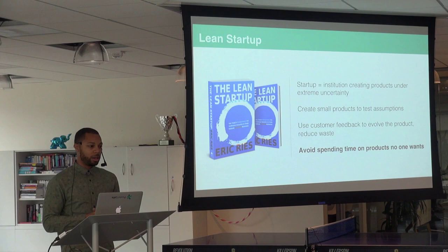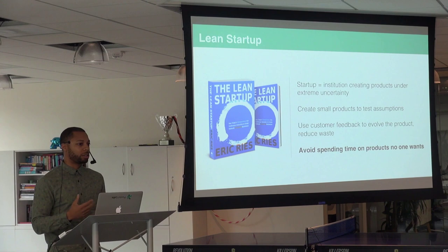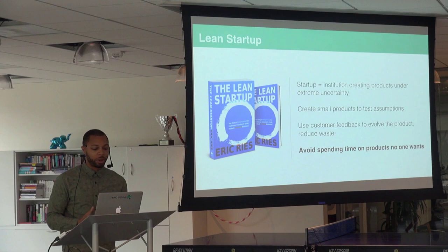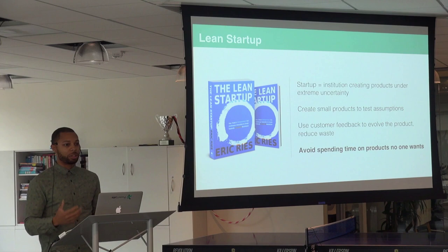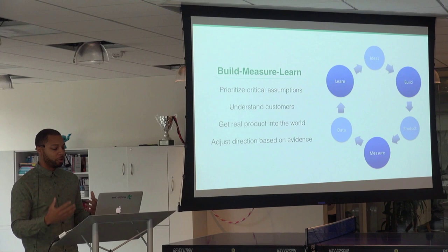What the lean startup prescribes is creating small products to prioritize and test assumptions, getting product in front of customers as quickly as possible, using user and customer feedback to iterate and evolve the product, and ensuring you're delivering something valuable to customers. Another main component of lean startup is reducing waste — one of the biggest forms of waste is to design, build, and develop a product that ultimately no one wants. The way we avoid that is through the build-measure-learn cycle.